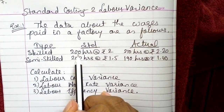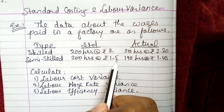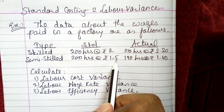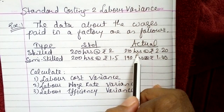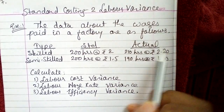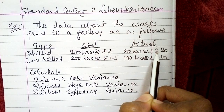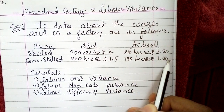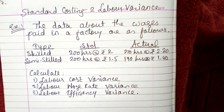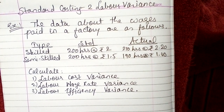Standard: 200 hours at rupees 2 per hour for skilled, and 200 hours at rupees 1.5 per hour for semi-skilled. Actual: 210 hours at rupees 2.2 for skilled — so standard rate was 2 and actual rate is 2.2 — and 190 hours at rupees 1.4 per hour for semi-skilled. Calculate labor cost variance, labor wage rate variance, and efficiency variance.